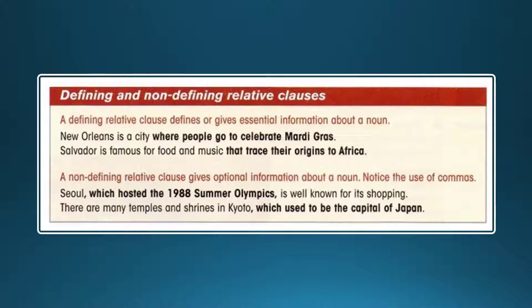A defining relative clause defines or gives essential information about a noun. New Orleans is a city where people go to celebrate Mardi Gras. Salvador is famous for food and music that trace their origins to Africa.